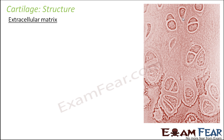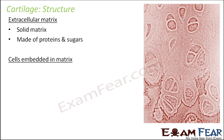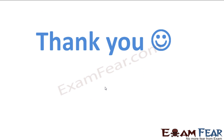The structure of cartilage also has a matrix, and the matrix here is solid, made up of proteins and sugars. The cartilage cells are called chondrocytes. The entire space is the matrix, and the cells embedded in it are the chondrocytes.